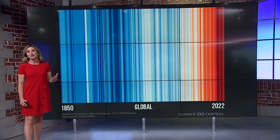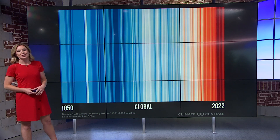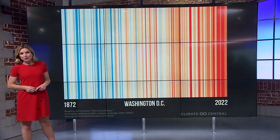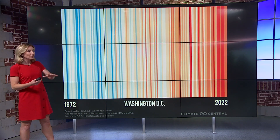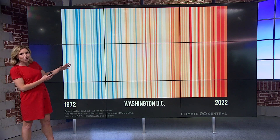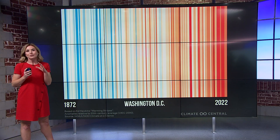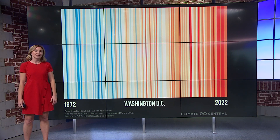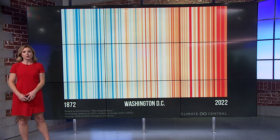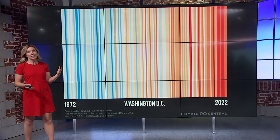When we look at the stripes specifically for Washington, DC, the colder than average and hotter than average years aren't as brightly colored, meaning the departure from average isn't as significant, but you can still clearly see the warming trend since the 1870s — just a very visual way to show what we've been watching for so many decades.